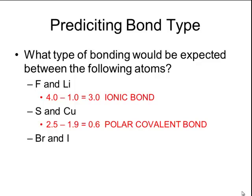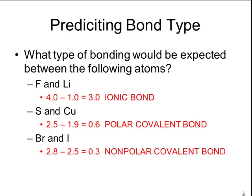Finally, when we analyze the electronegativities of bromine and iodine, their values are almost the same — bromine is 2.8 and iodine is 2.5. So if a bond were to form between an iodine atom and a bromine atom, it would be a nonpolar covalent bond, because the difference between the two electronegativities is 0.3, which falls within the range of a nonpolar covalent bond. The electrons are roughly going to be equally shared between those two atoms.